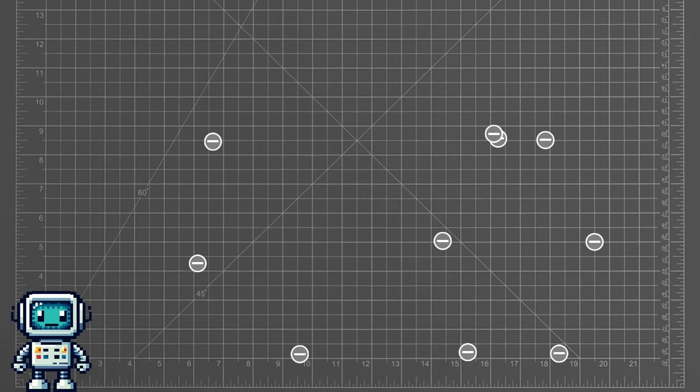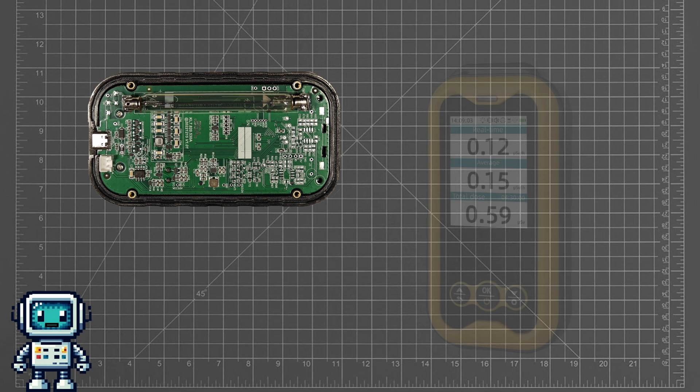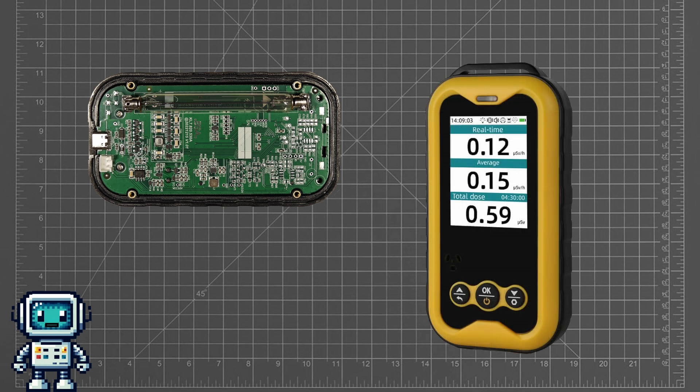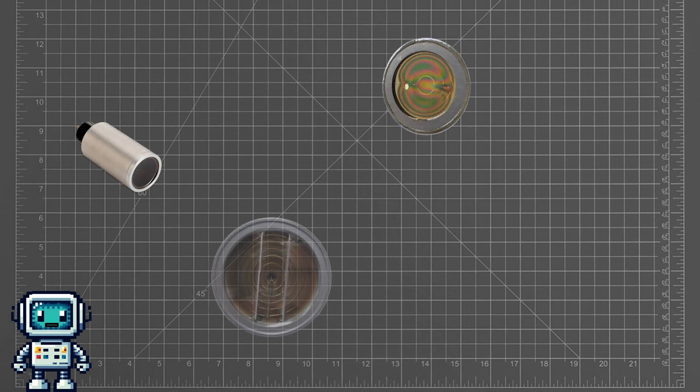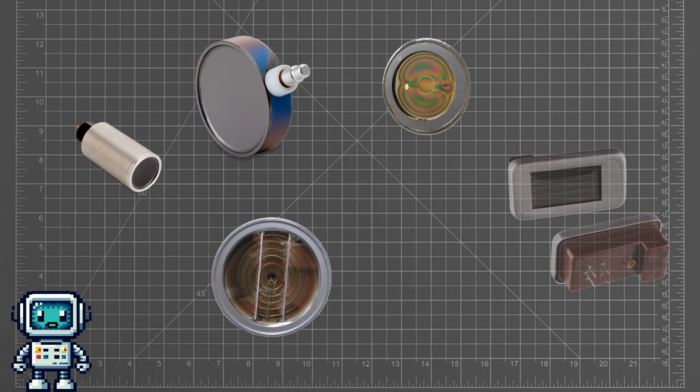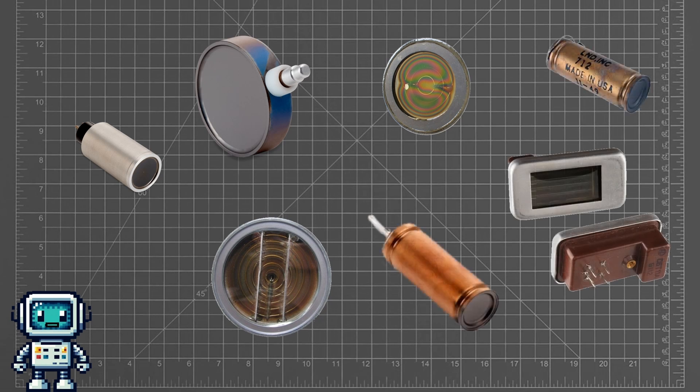And then we would change the Geiger-Müller tube for a type that doesn't use a glass envelope and have a thick plastic case right in the back-scattering path. For this, a tube with a mica window would be ideal. We would also expect that such a tube to have a higher sensitivity, again reducing the acquisition time and increasing accuracy.